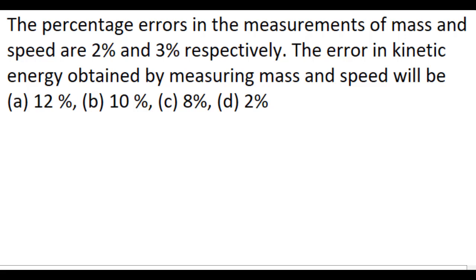The percentage errors in the measurement of mass and speed are 2 percent and 3 percent respectively. The error in kinetic energy obtained by measuring mass and speed will be?